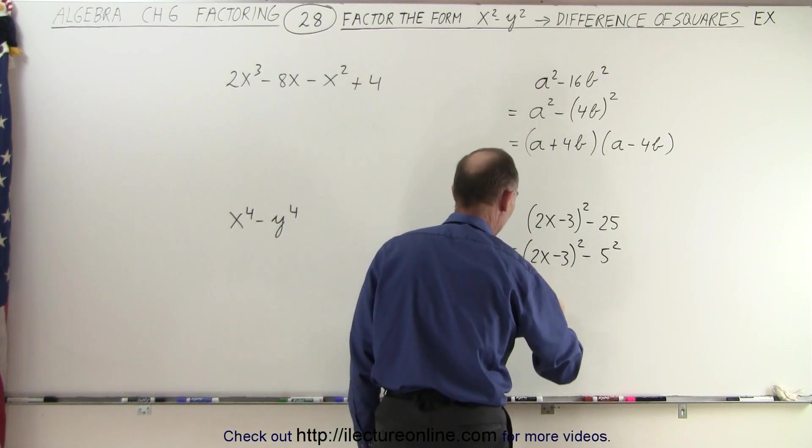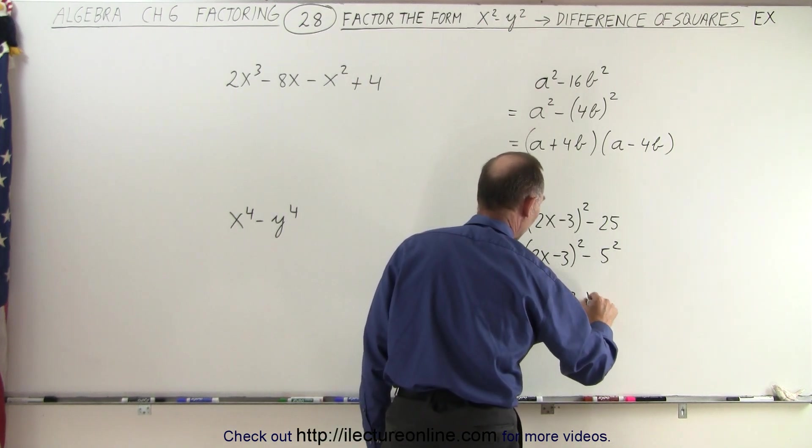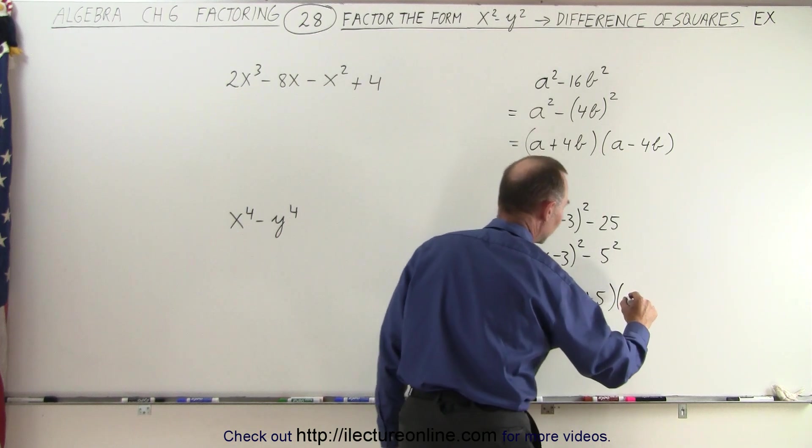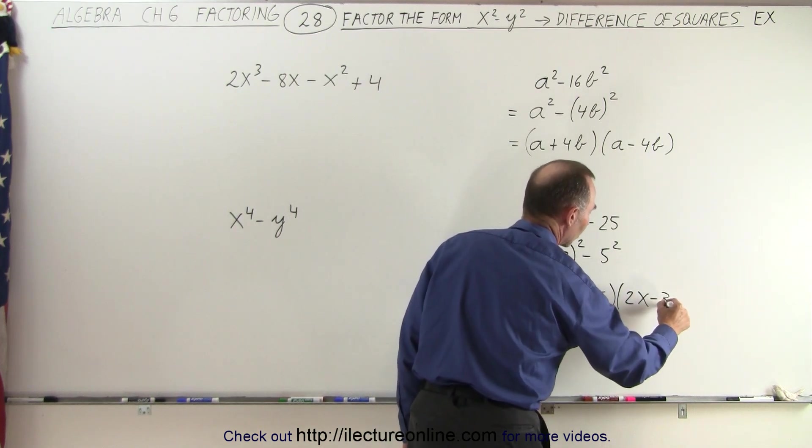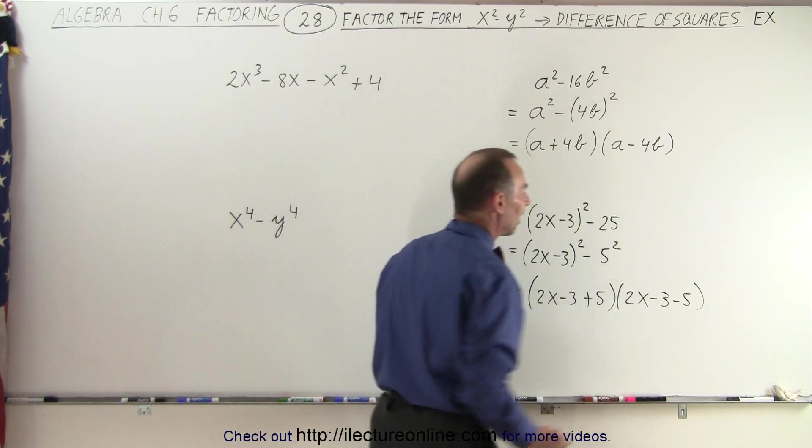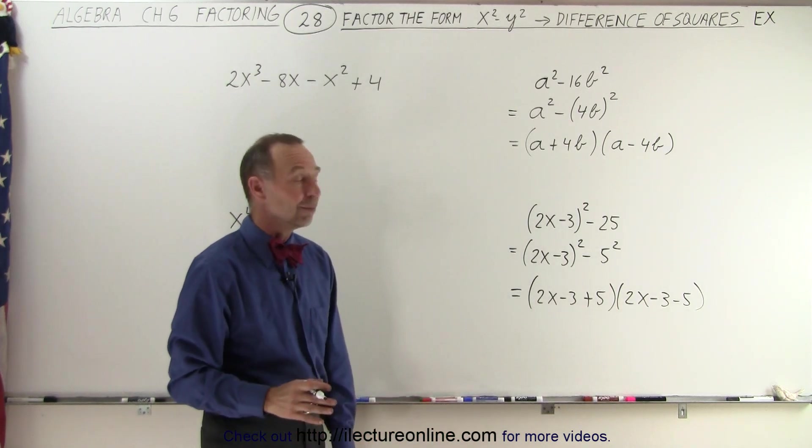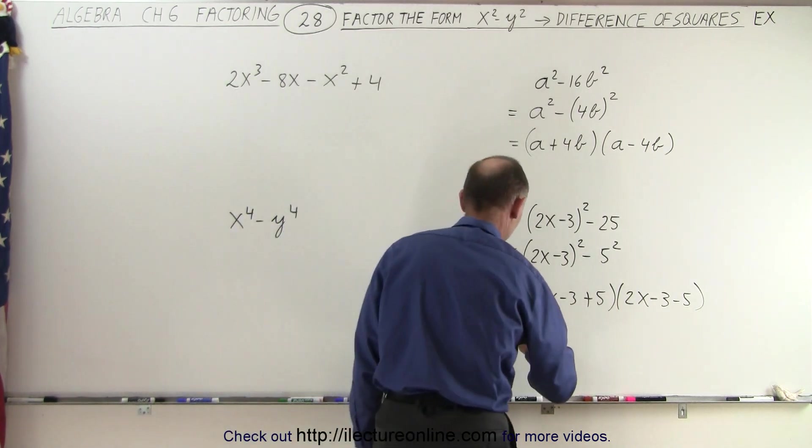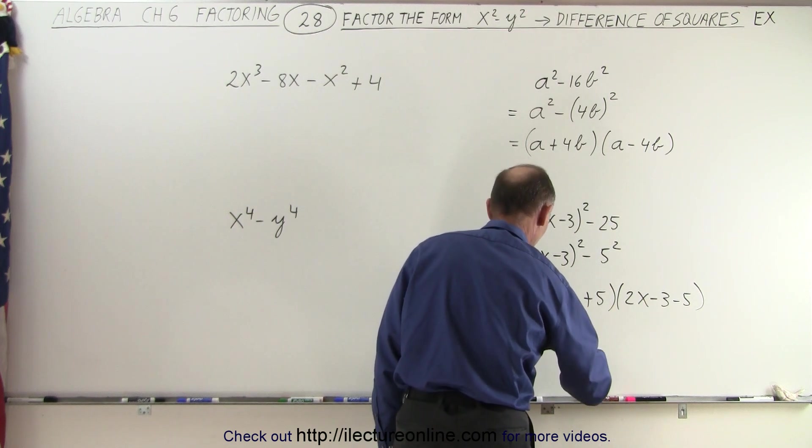So this can be factored as 2x minus 3 plus 5 times 2x minus 3 minus 5. And of course, that can then be further factored as follows.